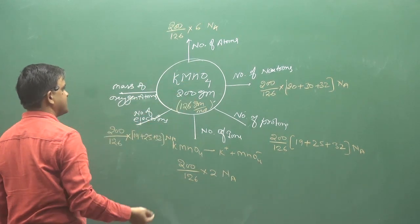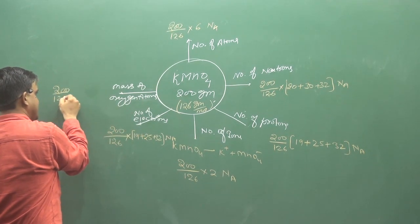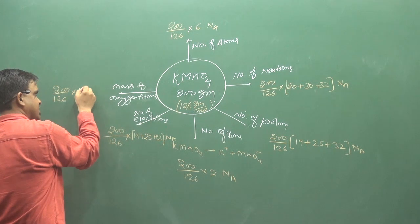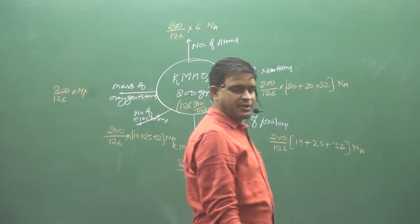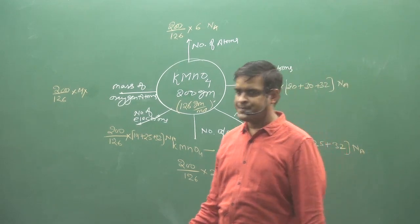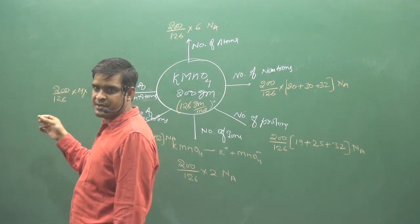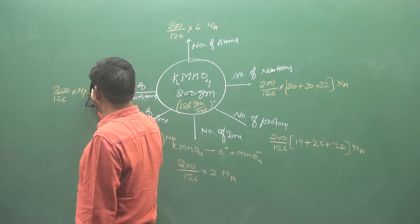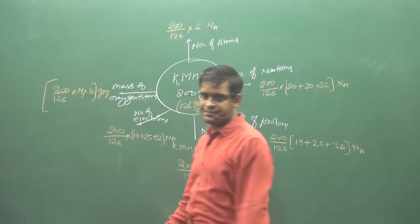KMnO4 mass of oxygen atom. 200 divided by 126, multiply by oxygen 4, atom weight. Direct 32, 16, 64. But how much will you write? And this is gram.